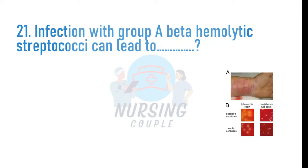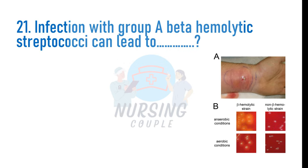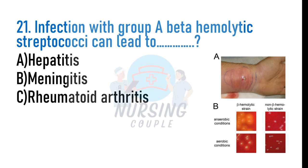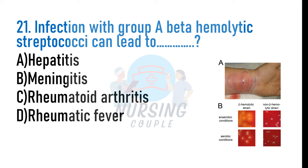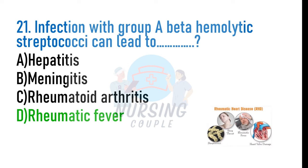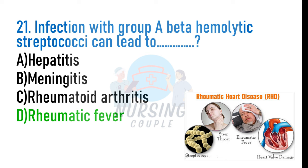Infection with Group A beta-hemolytic streptococci can lead to: A. Hepatitis, B. Meningitis, C. Rheumatoid arthritis, D. Rheumatic fever. The answer is Option D: Rheumatic fever. Rheumatic fever is a disease that can result from inadequately treated streptococcal sore throat or scarlet fever. It causes inflammation of the heart, blood vessels, and joints.